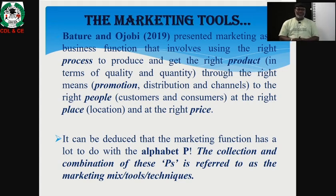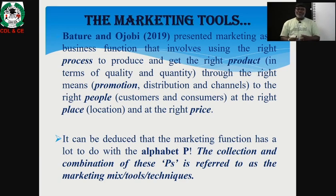Baturi and Mark in 2019 presented marketing as a business function that involves using the right process to produce and get the right product in terms of quality and quantity through the right means — including promotion, distribution and channels — to the right people, that is the customers and consumers, at the right location and at the right price. It can be deduced from this introduction that marketing as a function has a lot to do with the letter P.